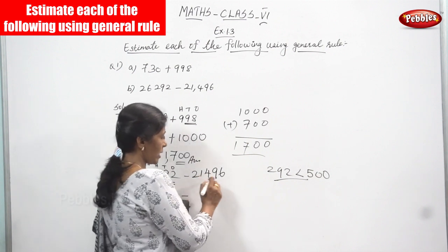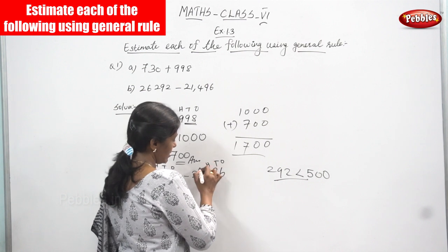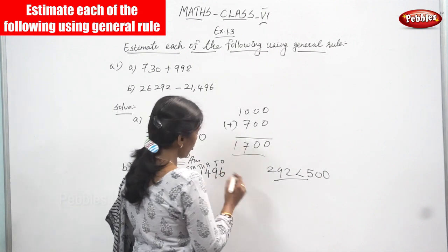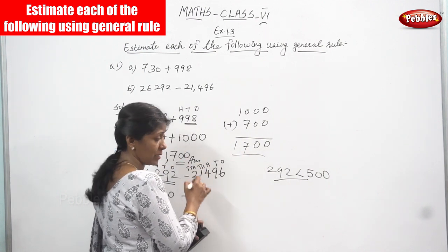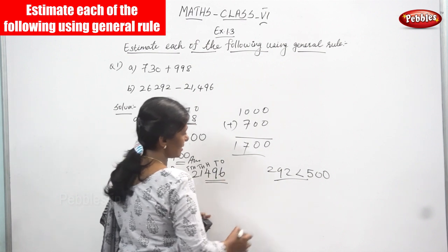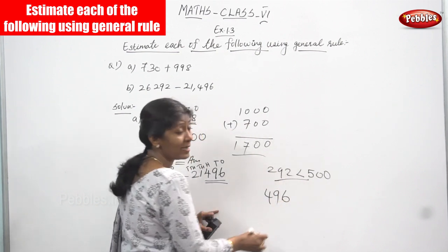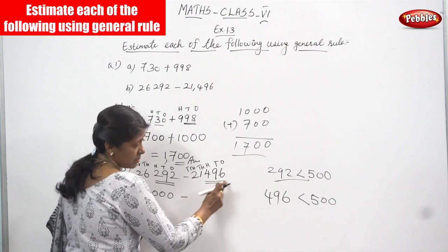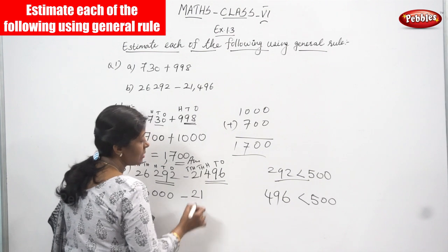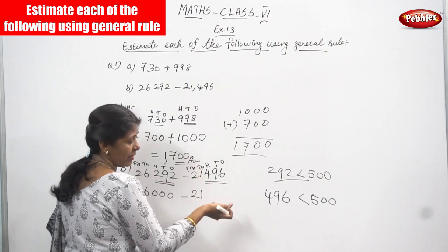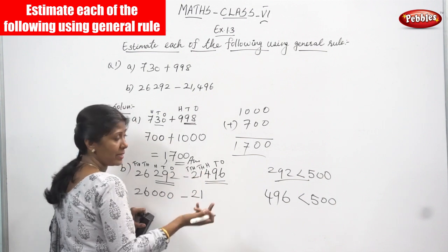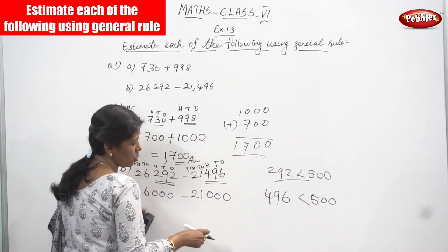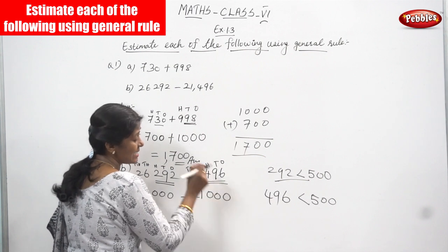Here also, for 21,496, you round to the nearest 1,000. You have to consider the last three digits: 496 — hundreds, tens, and ones. 496 is also less than 500, so you write the last three digits as 0 and keep 21 as it is. Nearest 1,000 means the last three digits always become 0. So 21,496 rounded to the nearest 1,000 is 21,000.